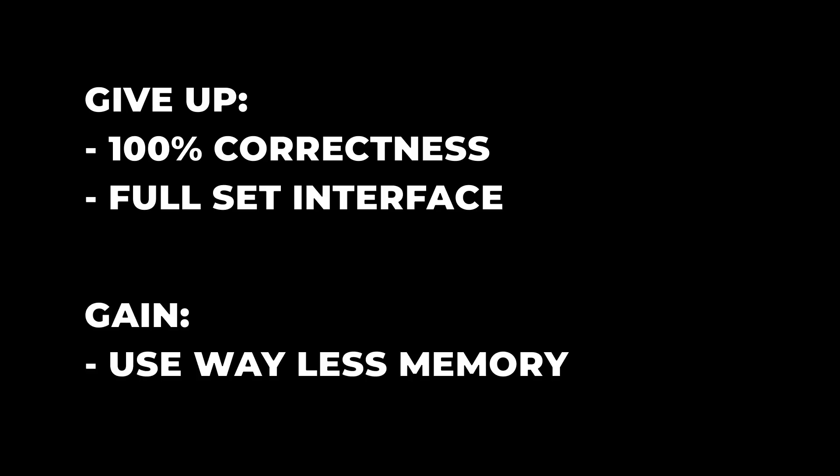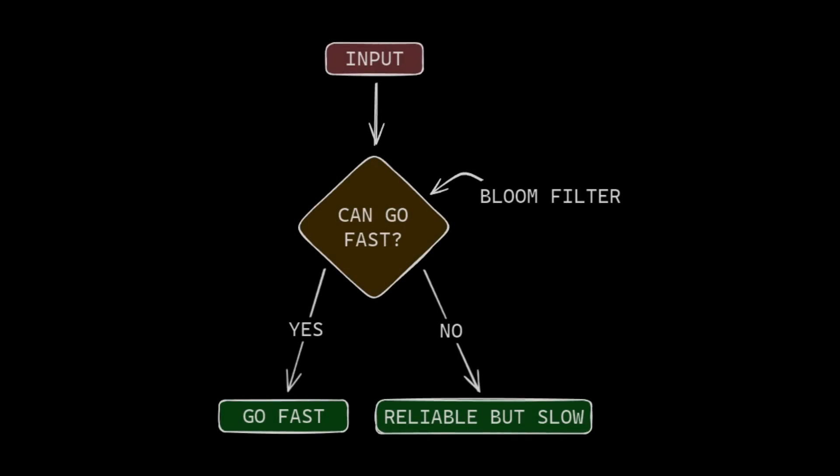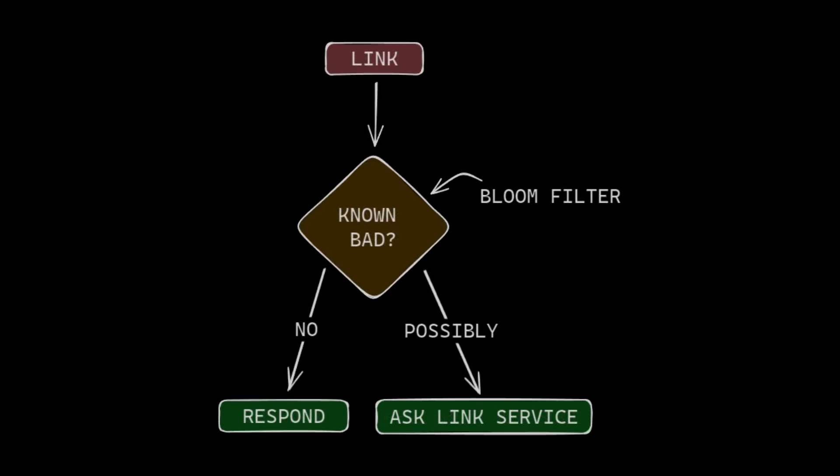The catch is that you need a use case where mistakenly identifying an element as in the set when it's not is okay. That often occurs when you have a fast way to compute something that works for most but not all elements and a much more expensive way to compute the same thing that always works. For our website, we can use a bloom filter to tell us yes, a link is possibly bad or definitely no, this link is not a known bad link. If the bloom filter says a link is possibly bad, we fall back to the paid service to give us a reliable answer. So it's fine if we get a false positive in a small percentage of cases. That's still a win compared to sending everything to the paid service.